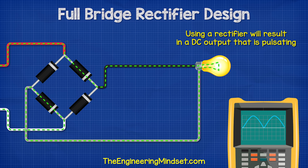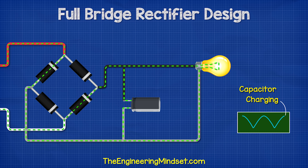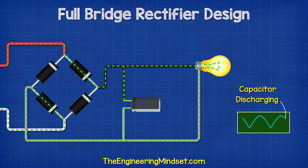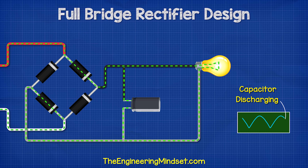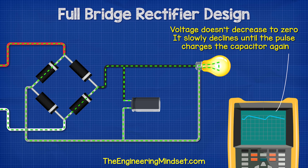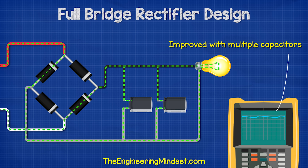Using a rectifier will result in a ripple in the waveform. To smooth this out, we need to add some filters. The basic method is to simply add an electrolytic capacitor in parallel to the load. The capacitor charges during the increase in voltage and stores the electrons. It then releases these during the decrease, which therefore reduces the ripple. The oscilloscope will show the peaks of each pulse, but now the voltage doesn't decrease to zero — it slowly declines until the pulse charges the capacitor again. We can further reduce this by using a larger capacitor or by using multiple capacitors.